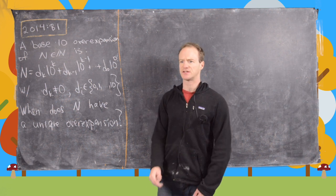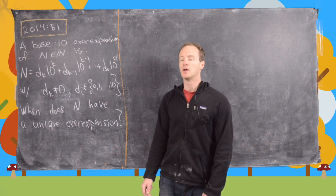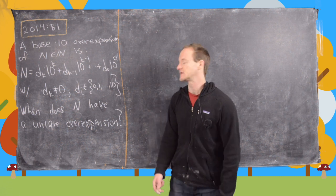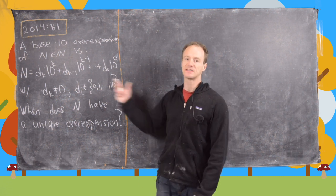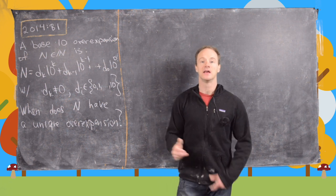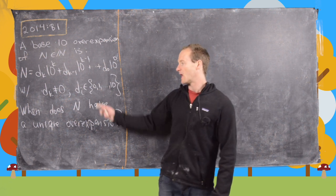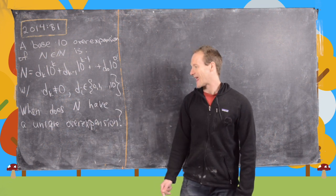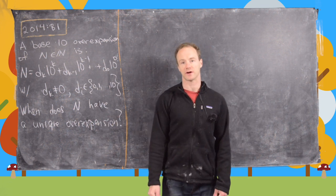In other words, that's just the way of looking at a number with a tens place, hundreds place, thousands place, and so on. But this is a bit of a play on that where we allow 10 in one of those place values. The question we want to answer is: when does n have a unique over-expansion?